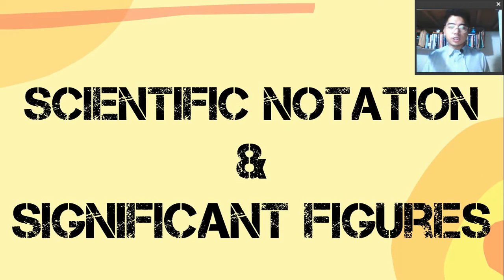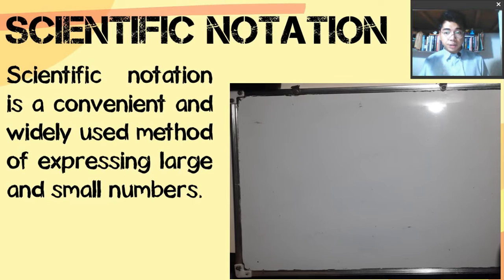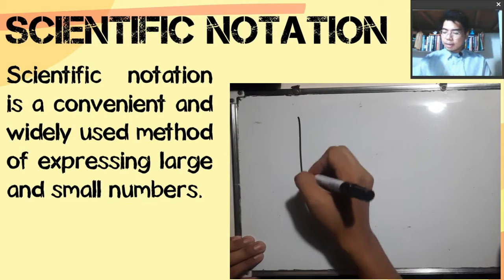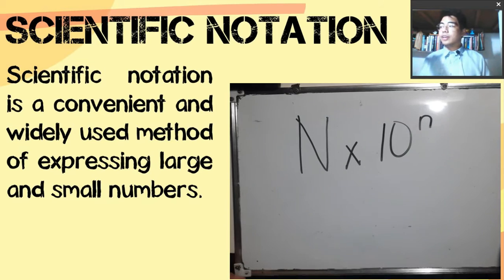For this discussion, we are going to start with scientific notation and significant figures. Scientific notation is a convenient and widely used method of expressing large and small numbers. If you look at your module on page number 3, you will observe that any quantity can be expressed in the form of scientific notation as capital letter N times 10 raised to small letter n.